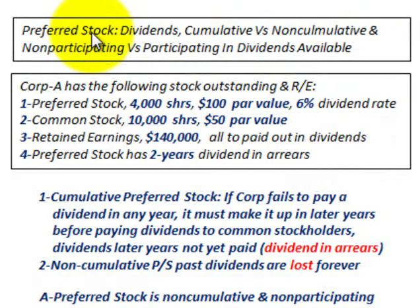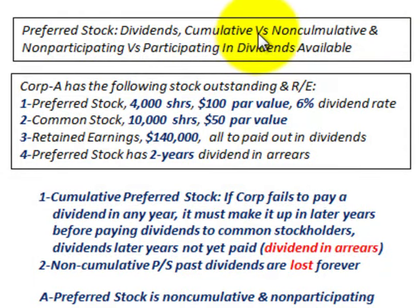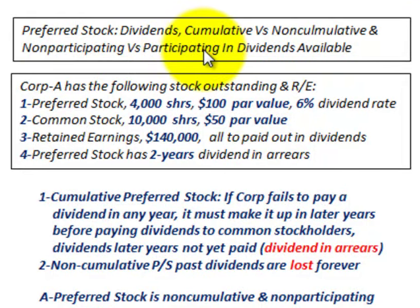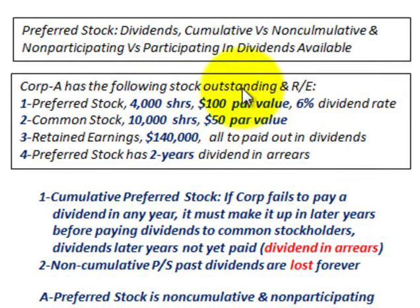What we're going to be looking at here is preferred stock and the dividends distribution. We're going to be comparing cumulative preferred stock versus non-cumulative, and also looking at non-participating versus participating preferred stock in the dividends that are available. Our example will use Corporation A with the following stock outstanding and retained earnings.